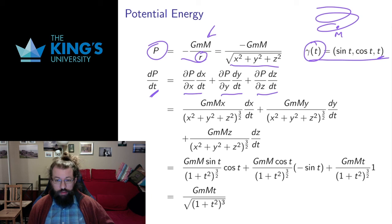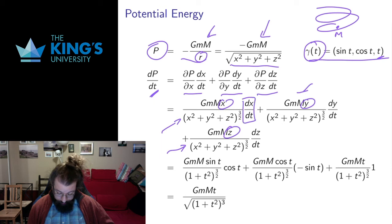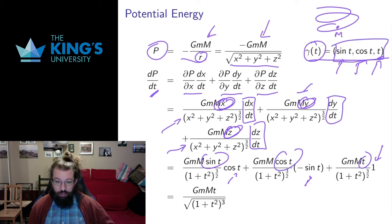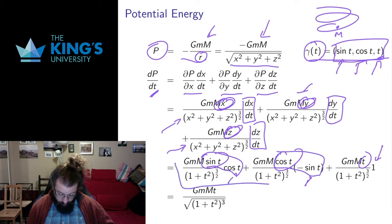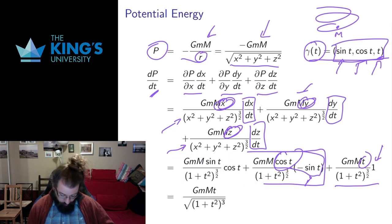There is the chain rule definition with three components for three variables. The partial derivatives of potential energy with respect to x, y, and z all share the same denominator and differ only in their numerators: the x partial has x, the y partial has y, and the z partial has z. I multiply those by the rates of change of the parametric curve: the derivative of sine is cosine, derivative of cosine is negative sine, derivative of t is one. After replacing x, y, z with sine, cosine, and t respectively, I see that the first two terms give sine·cosine and sine·(−cosine), which cancel each other. All that remains is the z term, which simplifies to the expression at the bottom.